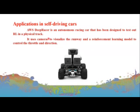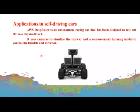Reinforcement learning supports functions like motion planning, dynamic pathing, scenario-based landing policies, and avoiding collisions. A best example is the AWS DeepRacer — an autonomous racing car designed to test reinforcement learning on a physical track. It uses cameras to visualize the runway and a reinforcement learning model to control the throttle and direction.